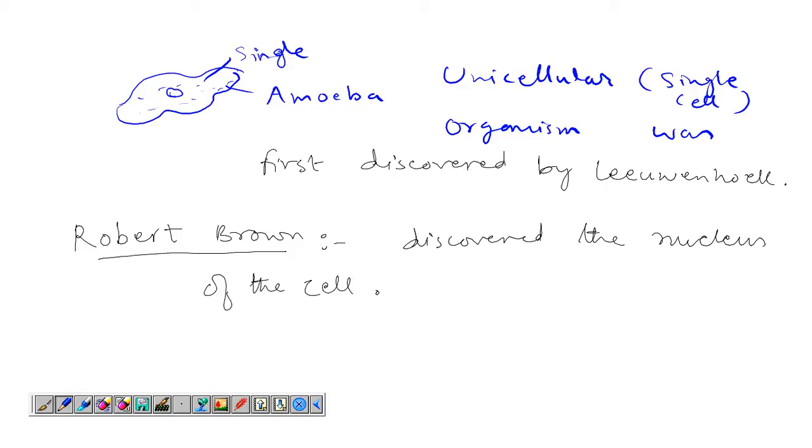We will talk more about the nucleus and other organelles of the cell in the next video when we discuss the structure of the cell. But the basic thing is, this is the nucleus, this is a cell, and this is called the nucleus, and it was discovered by Robert Brown.